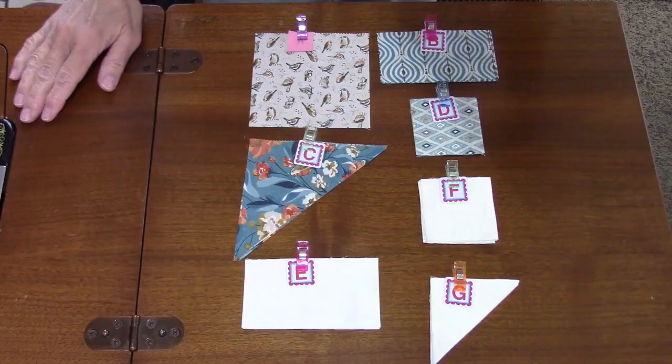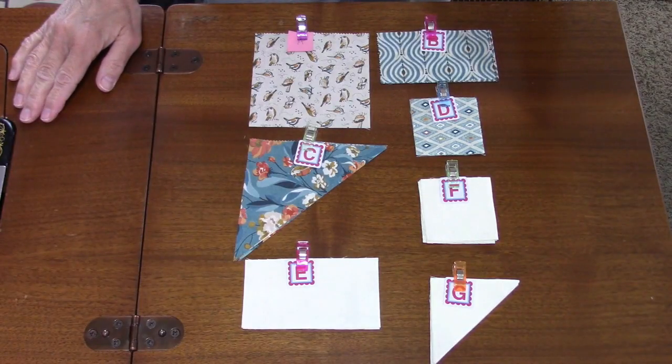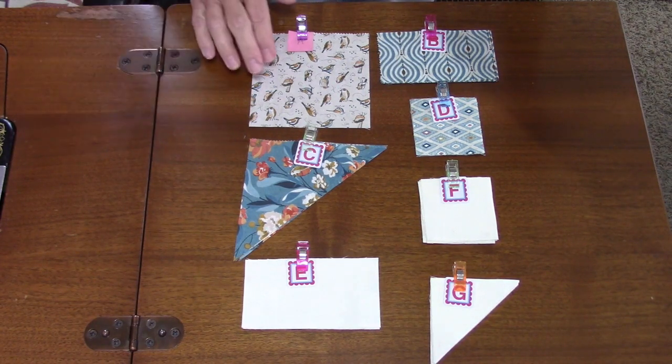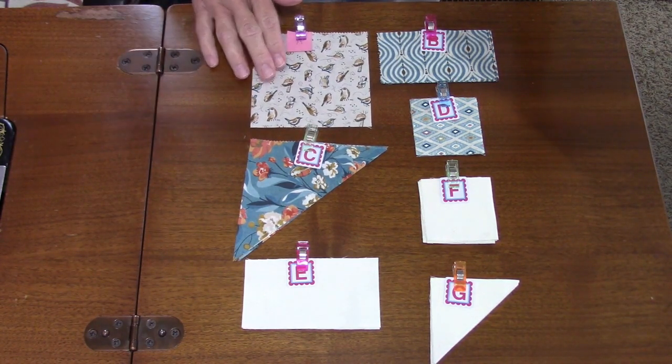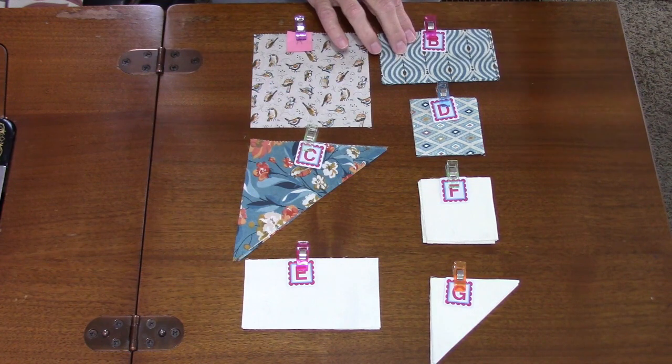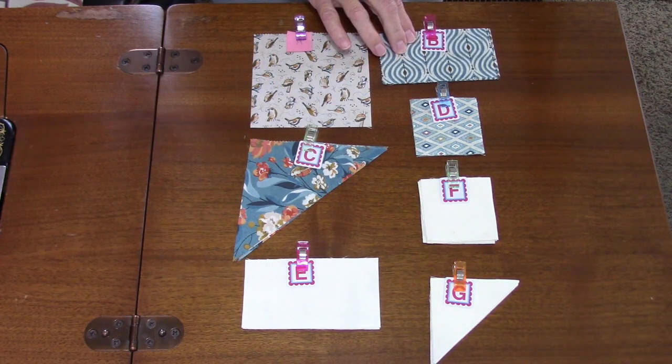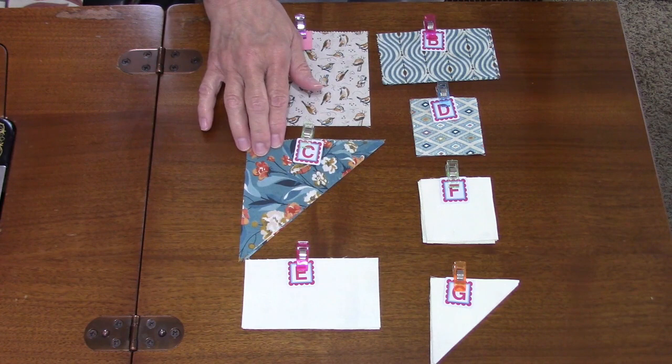Here are the fabrics you're going to need to make the Aunt Dinah's Choice block. For A you're going to need one four and a half inch square. For B you'll need four four and a half by two and a half inch rectangles. For C you'll need two five inch squares.